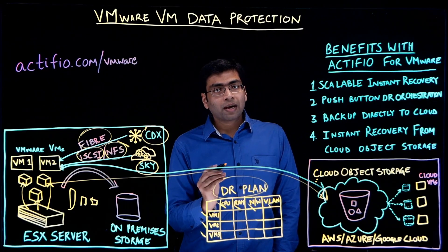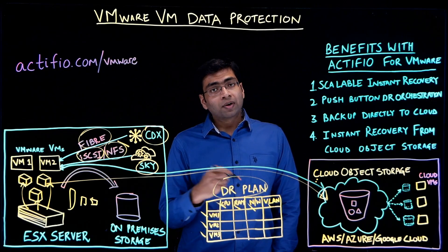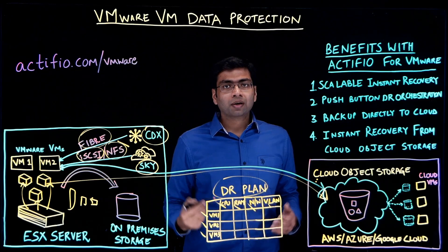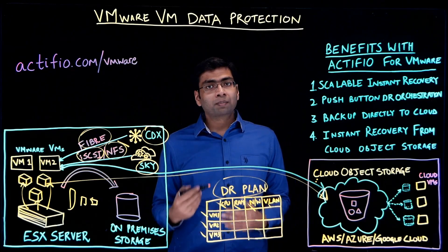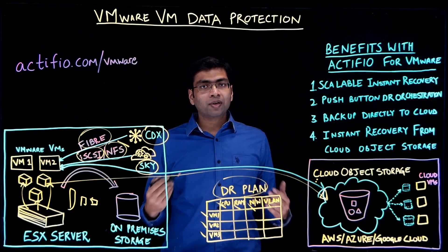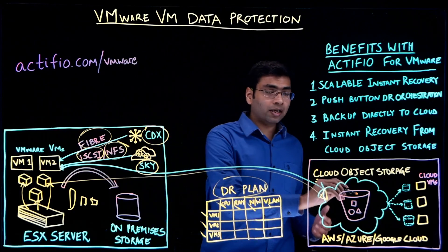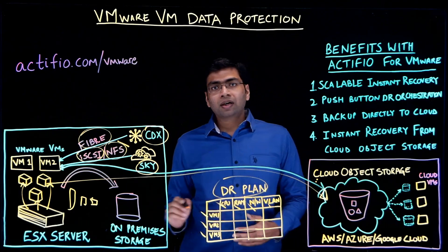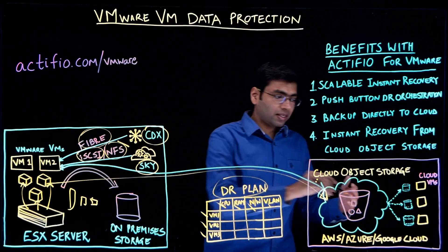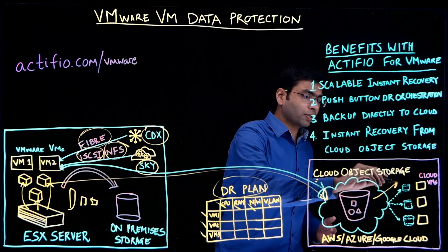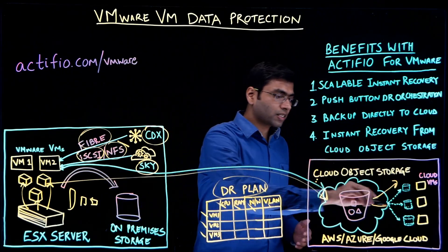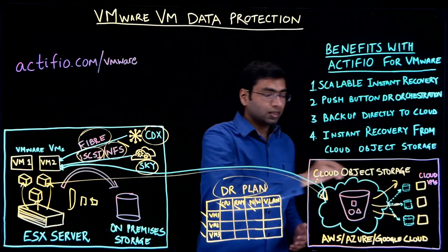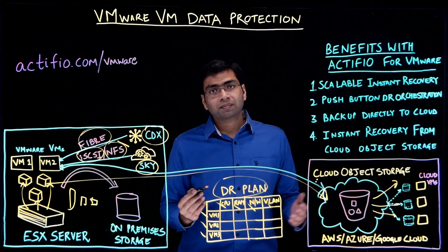No other backup vendor can do this. What's even better, Actifio offers a cloud mobility feature where you can actually recover your backed-up VMware VMs in the public cloud as cloud-native VMs — such as AWS EC2 instances, Azure IaaS VM instances, or Google Cloud compute instances — instantly within minutes.